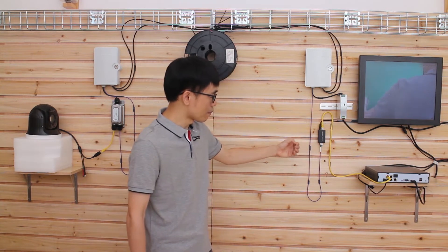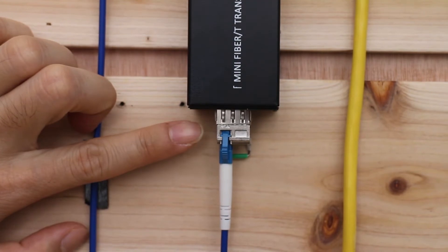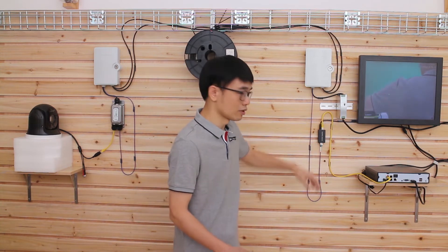One important thing about the media converter is the SFP module. It determines what kind of fiber optic cable you can use—single mode or multimode—and what connector type. This one uses single mode with an LC connector.